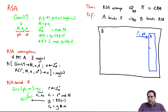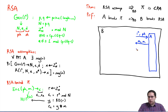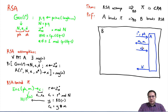The adversary can actually do the encryption queries himself, so there is no need for encryption oracle access. At some point he will send us two messages M0 and M1 from the message space — these messages are of the same length. We will respond with some ciphertext c_b, which should be an encryption of one of these messages. Eventually, the adversary will output its guess b', and the adversary wins if b' correctly identifies which message we encrypted.